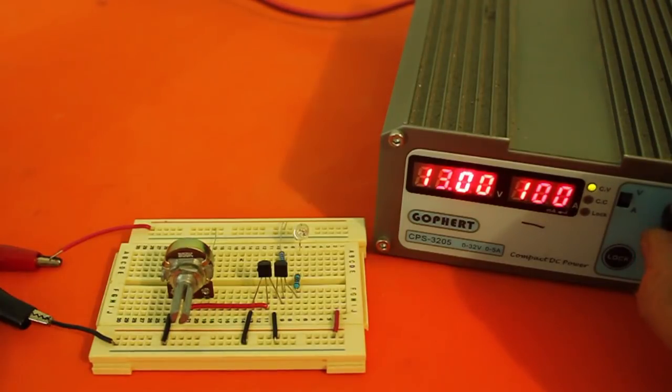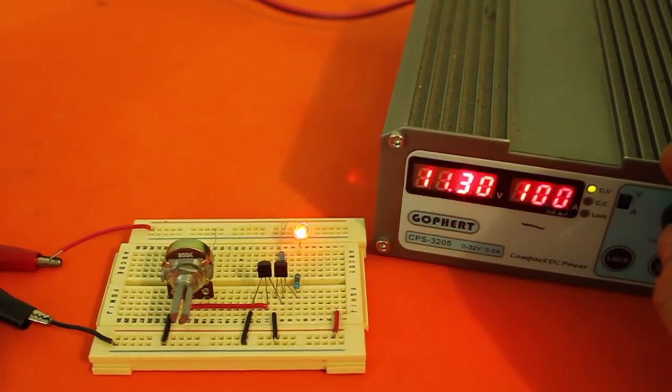When the voltage goes to 12 or less, the LED is on indicating that the voltage is now less than the preset value.